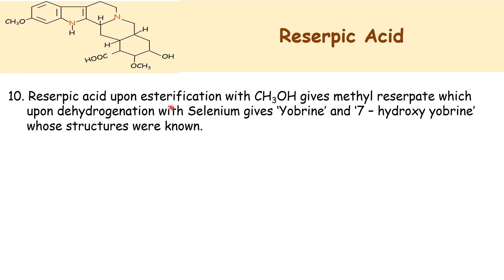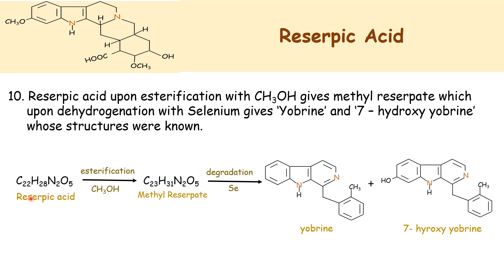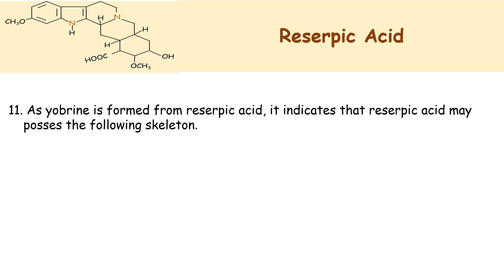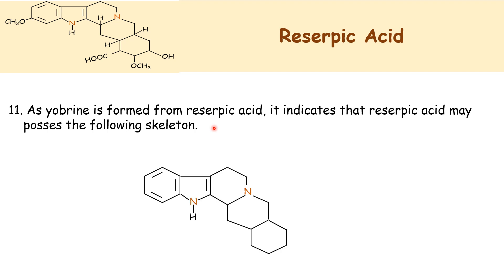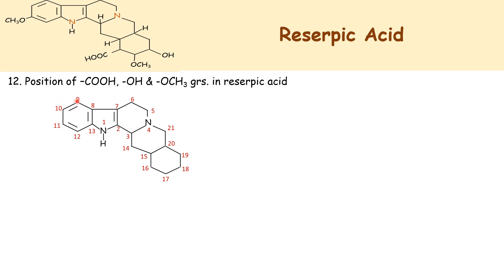The reserpic acid upon esterification with methanol gives methyl reserpate, which upon dehydrogenation with selenium gives two known products: yohimbine and 7-hydroxy-yohimbine. Reserpic acid esterification with methyl alcohol gives methyl reserpate, which upon degradation gives the two products yohimbine and 7-hydroxy-yohimbine, whose structures were known. Yohimbine contains indolrine and pyridine. As yohimbine is formed from reserpic acid, it indicates that reserpic acid may possess the following skeleton.